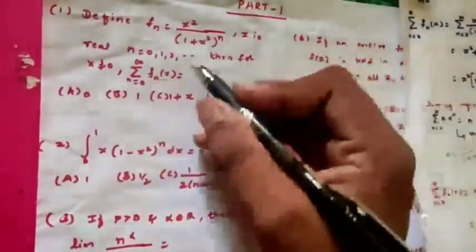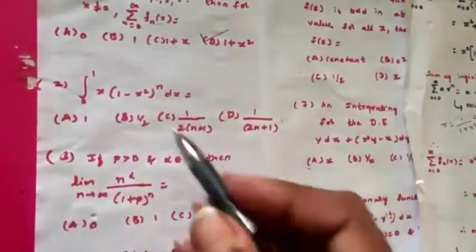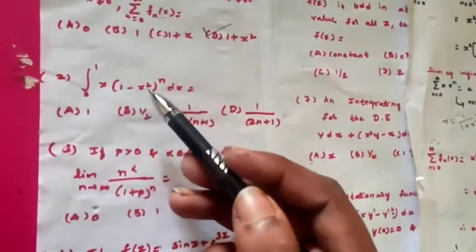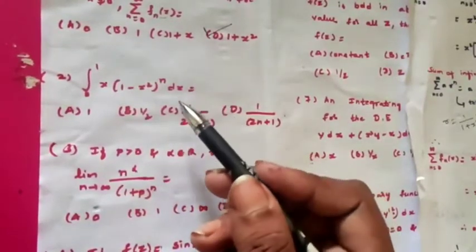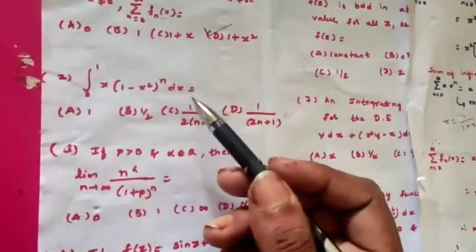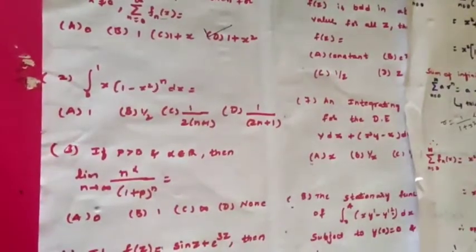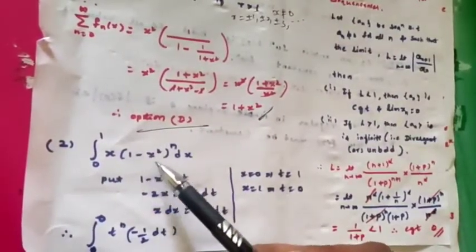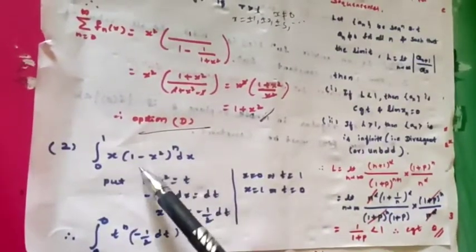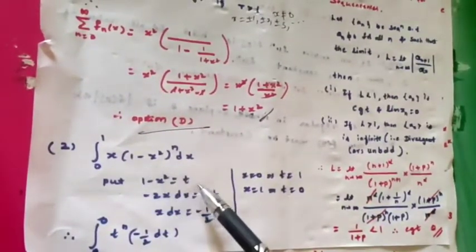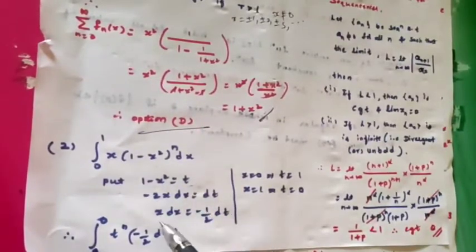The second question: integration from 0 to 1 of x(1-x²)^n dx. This is an important and easy question. In every exam and other state entrance examinations, definitely one or two questions are asked based on definite integrals and their properties. In place of 1-x² we put t, so we get x dx = -1/2 dt.